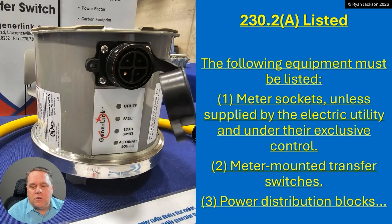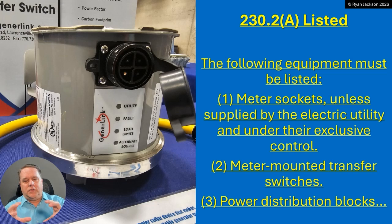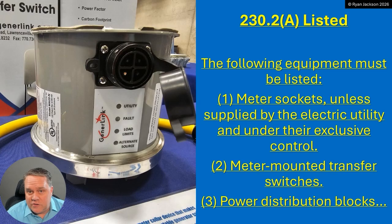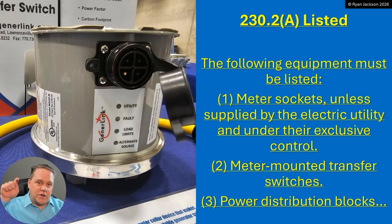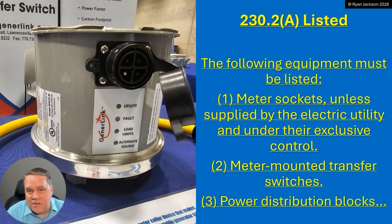Item two is a meter-mounted transfer switch — that also has to be a listed product. A meter-mounted transfer switch slips between the meter socket enclosure and the actual utility meter. You take out the meter — the utility does — you slip that thing in and then put the meter back in place, and it's a transfer switch. You can connect your generator right to it, and when it senses a loss of power from the utility, it isolates the utility, your generator kicks on, and it's unidirectional — it goes into the house but not back to the utility, so it doesn't kill any utility workers. Check with your utility before you get one of these, because a lot of utilities don't like it, and if they say you can't use it, you can't use it.